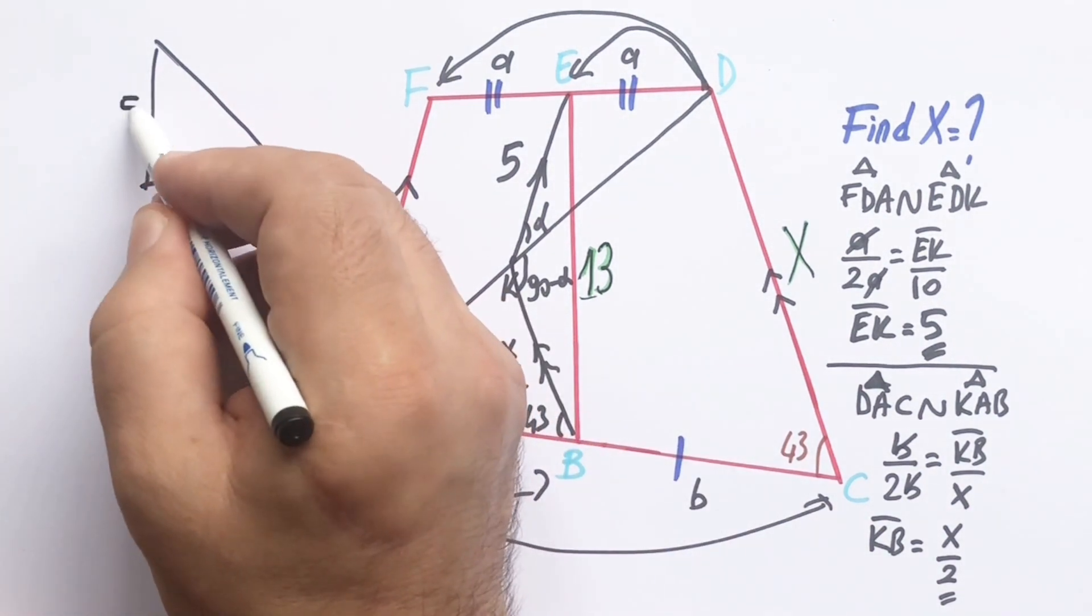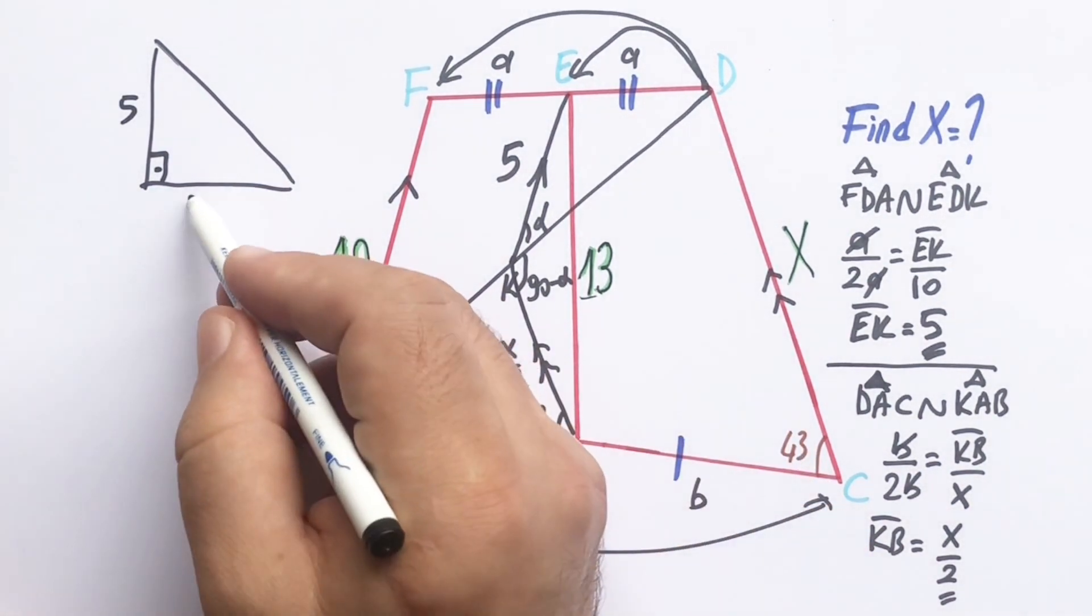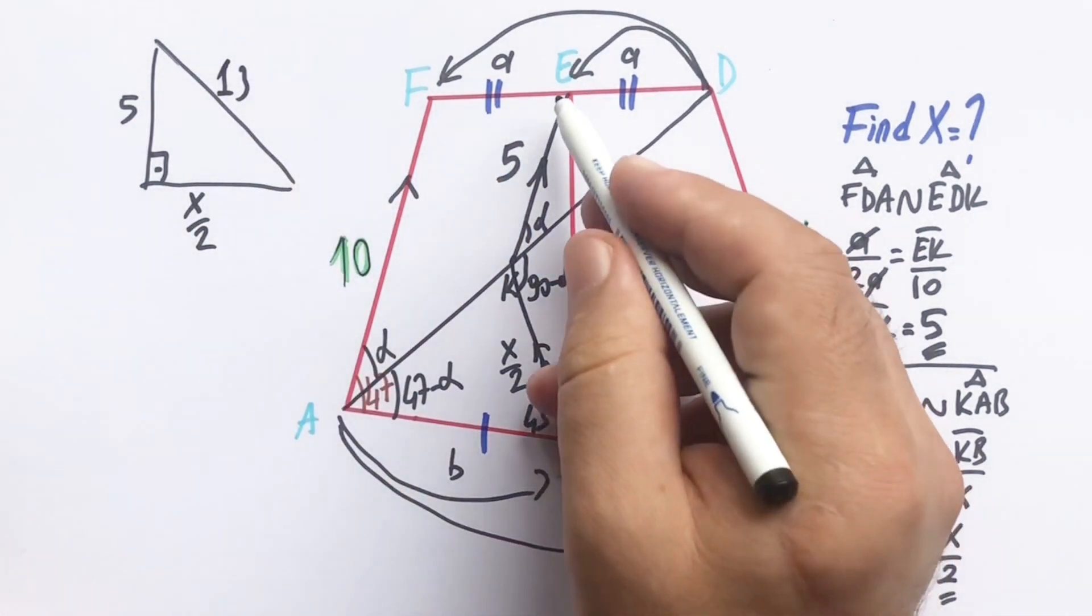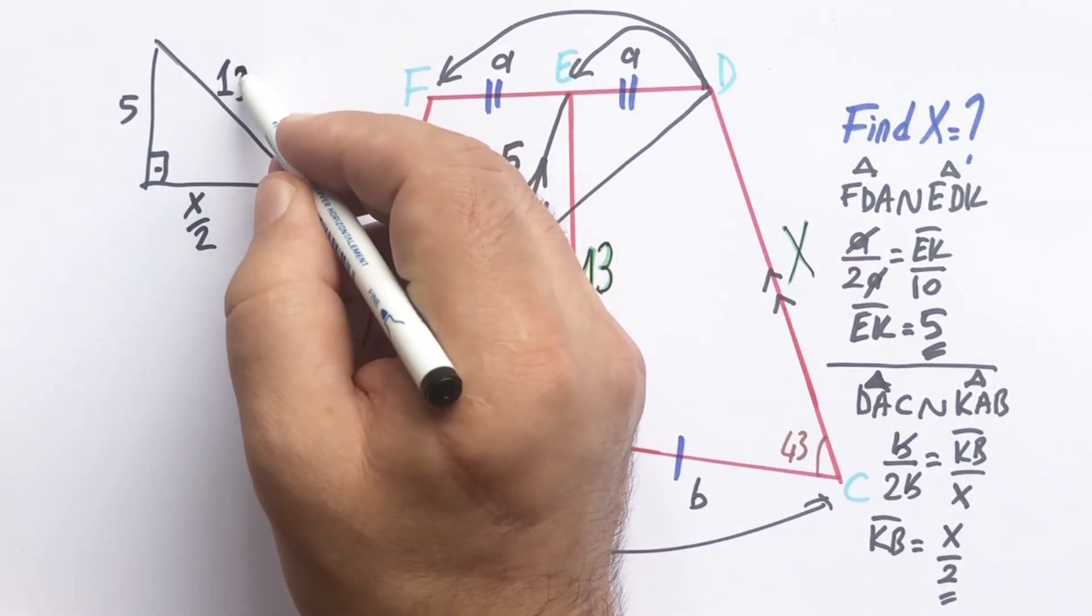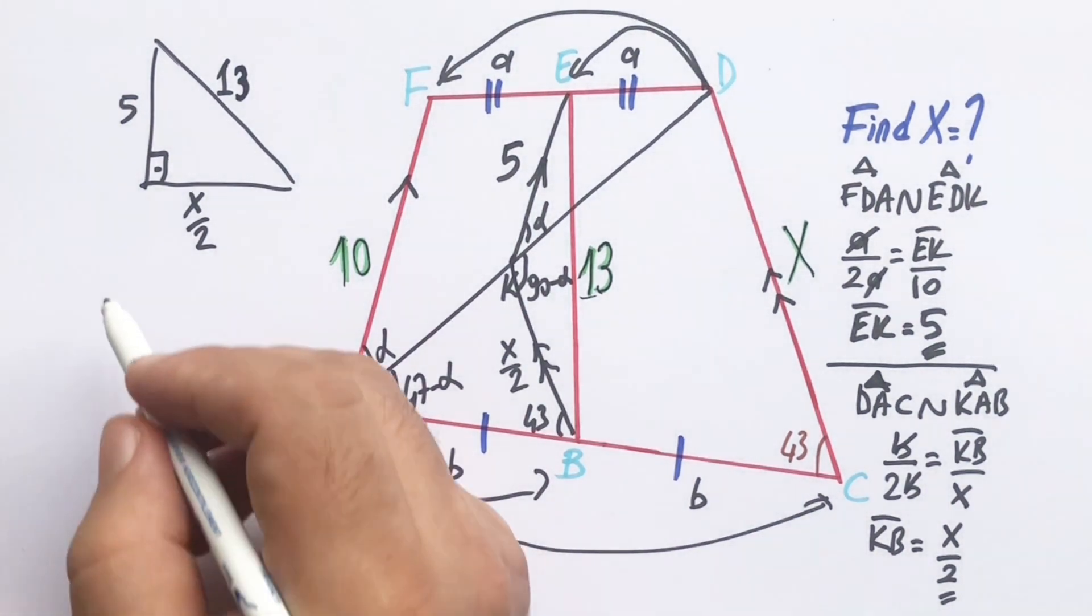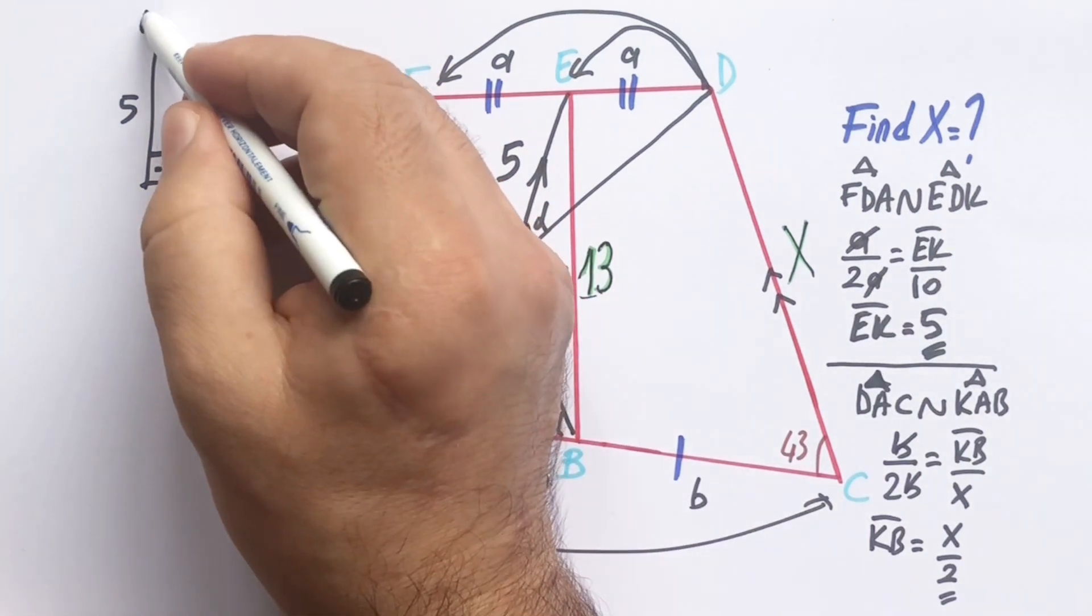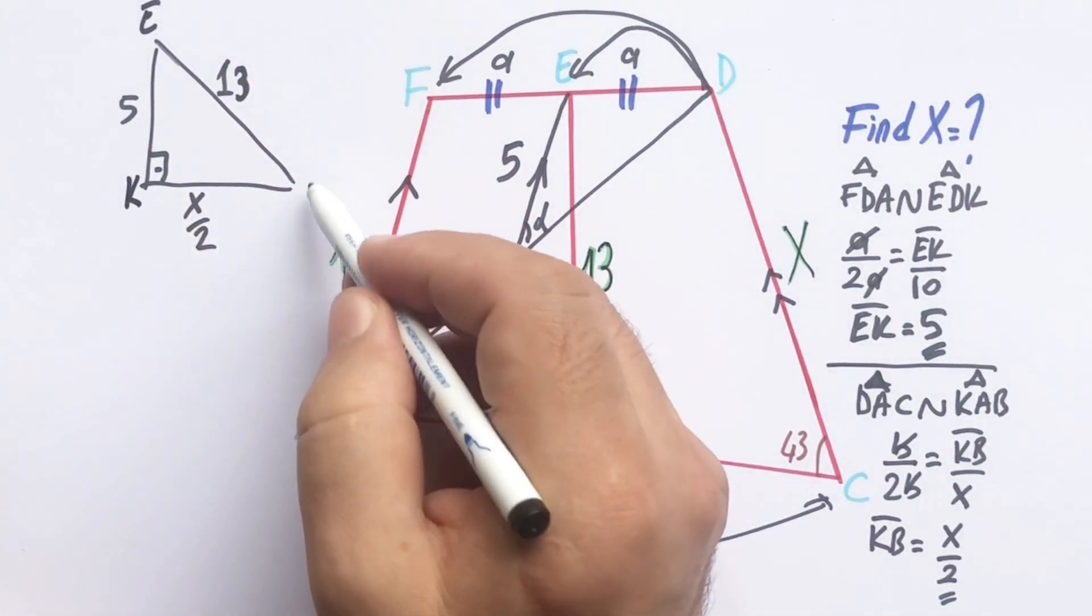Here is 90 degrees, so this two sides, 5 and X over 2, hypotenuse is 13. If we apply Pythagorean theorem to this triangle, we will get X.